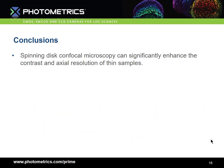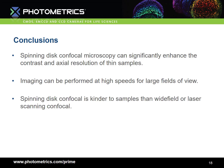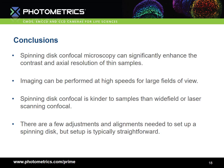In conclusion, spinning disk confocal microscopy can significantly enhance the contrast and axial resolution of thin samples. This is achieved by blocking the out-of-focus light from other planes other than the one that we're interested in. Imaging can be performed at high speeds with large fields of view, and spinning disk confocal is much kinder to samples than wide-field or laser scanning confocal, meaning photobleaching and phototoxicity are much reduced. There are a few adjustments and alignments needed to set up a spinning disk microscope in the optimal way, but set up is typically straightforward.